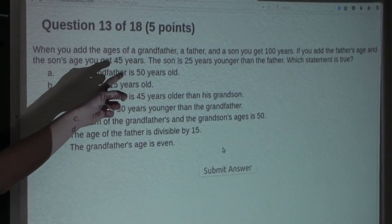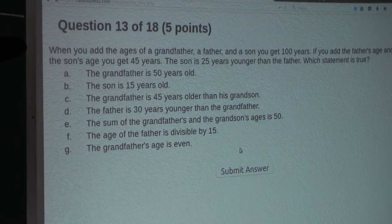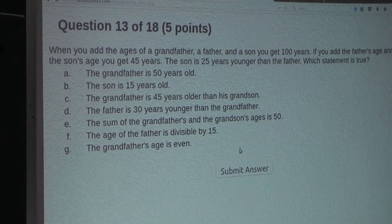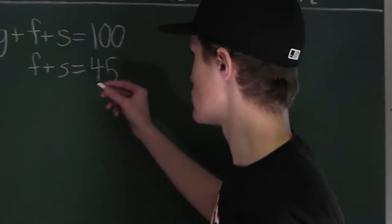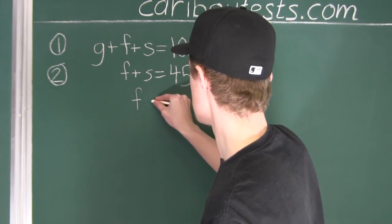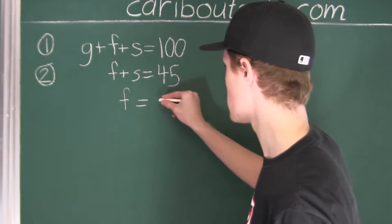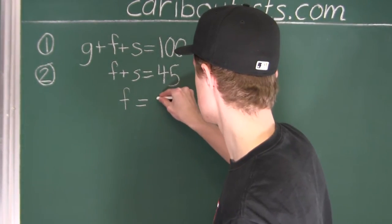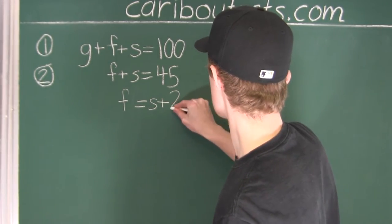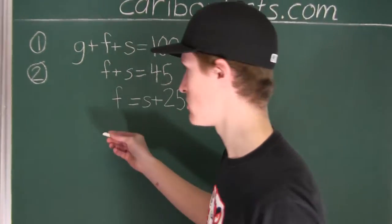Finally, the third statement: the son is 25 years younger than the father. That is F, which is the father's age, is equal to the son's age plus 25 years. That is the third equation.